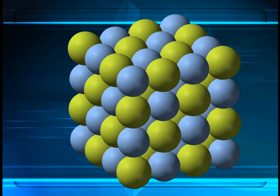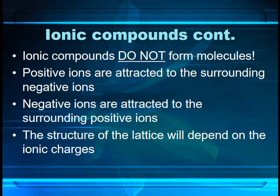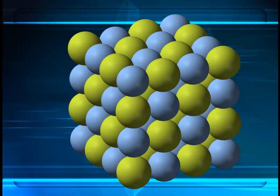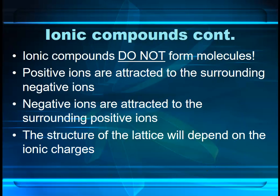In sodium chloride's case you've got one sodium ion for each chloride ion — equal numbers of both, because that's the ratio in the formula: one to one. That's obviously going to be different in different substances. I cannot stress this enough: ionic compounds do not form molecules. There is no discrete unit of sodium chloride with one sodium ion and one chloride ion. Your positive ions are attracted to the surrounding negative ions, your negative ions are attracted to the surrounding positive ions, while positive ions repel other positive ions and negative ions repel other negative ions — there's this constant kind of battle.